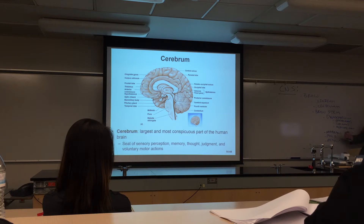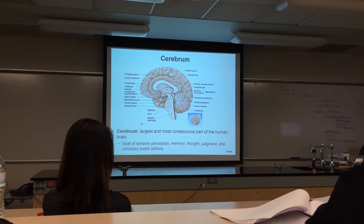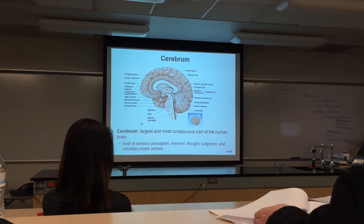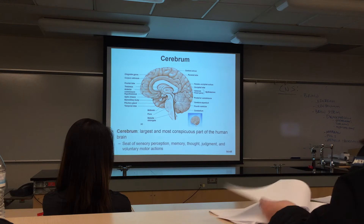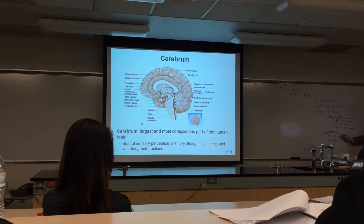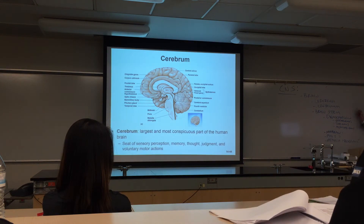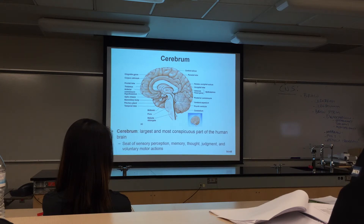Up to this point, last class we talked about the medulla, pons, and midbrain. We've also talked about the diencephalon — it's made of the epithalamus, thalamus, and hypothalamus.